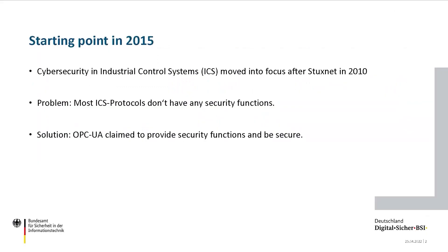In 2015, the Federal Agency for Information Security did a first review of OPC UA. After Stuxnet in 2010, cybersecurity moved into focus of industrial control systems. In the past, most ICS protocols don't have any security functions, so this was a problem and OPC UA seemed like a legitimate solution for this problem, because OPC UA claimed to provide security functions and be secure.